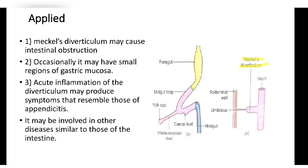Applied aspects of Meckel's diverticulum: it may cause intestinal obstruction. Occasionally it may have small regions of gastric mucosa. Acute inflammation of the diverticulum may produce symptoms resembling those of appendicitis. It may be involved in other diseases similar to those of the intestine.